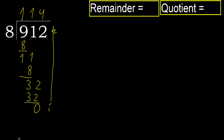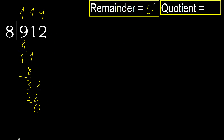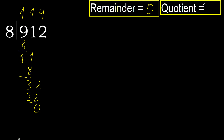There is no next number, therefore finish. Remainder is 0. Therefore 912 divided by 8 is answered here.